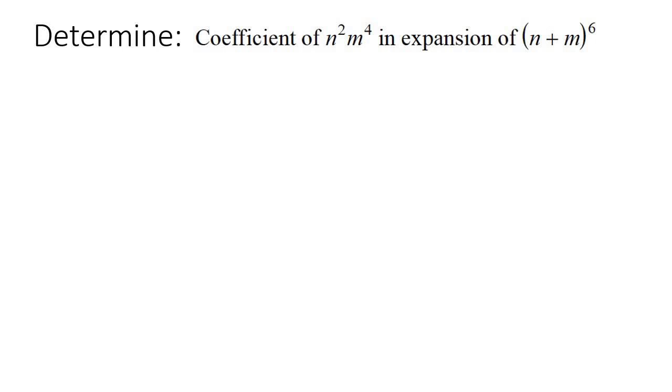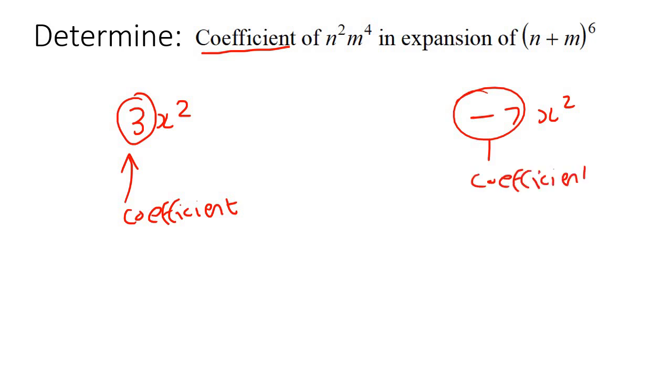What is a coefficient? If I have something like 3x², the number in the front is the coefficient. If you have -7x², then -7 is the coefficient. The coefficient is the number in front of the variable part.